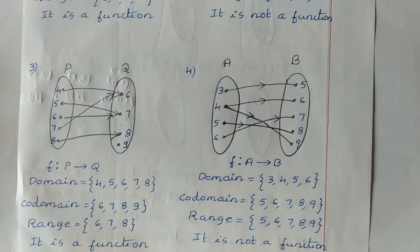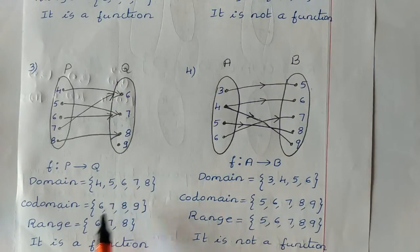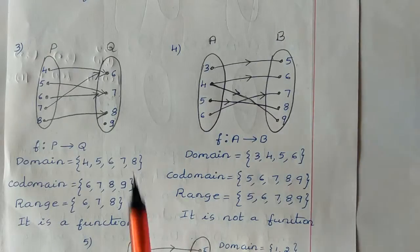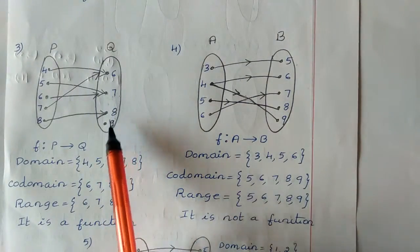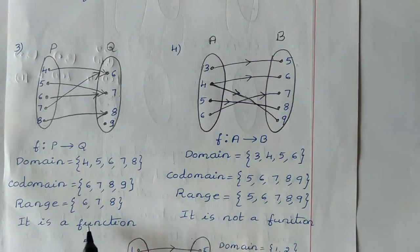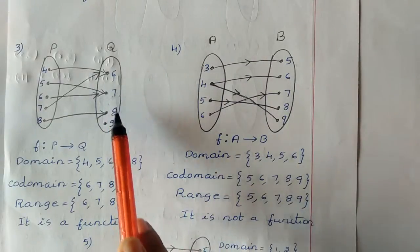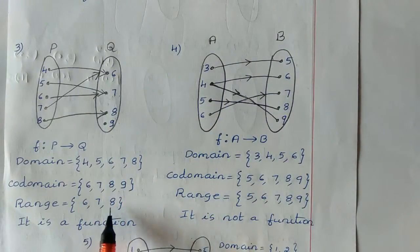For this third case, domain is {4, 5, 6, 7, 8} since all elements are mapped. Co-domain is {6, 7, 8, 9}. Range is {6, 7, 8} — only three elements are involved in mapping, so 9 is not included in the range.